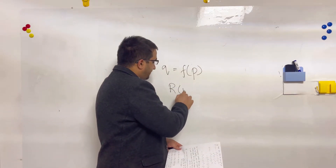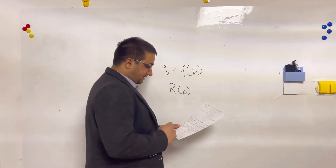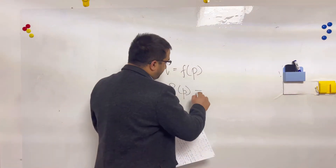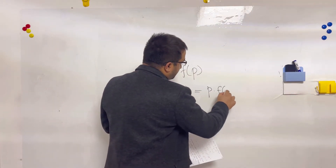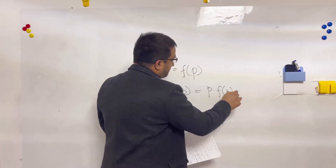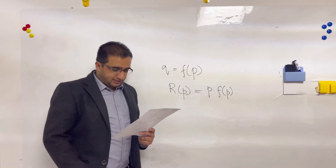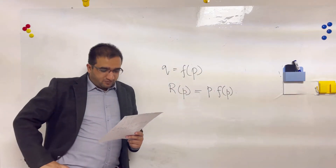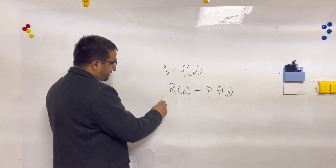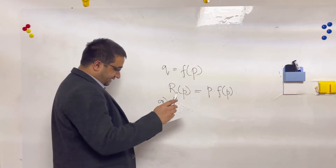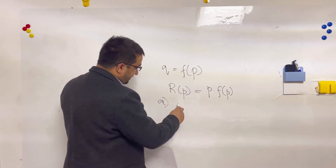The total revenue R will also depend on the price. R is P into Q, which is P times F of P. The first question asks: what does it mean to say F of 20 equals 10,000?